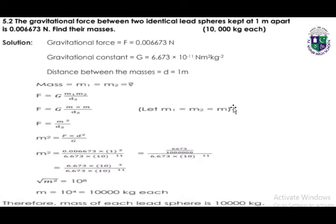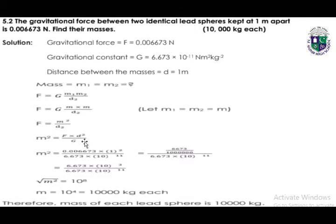Since the spheres are identical, m1 equals m2, so we use a single mass m. We rearrange the formula: m² = F·d² / G. Taking m² to the left side and putting the given values into our calculator, we get m² = 10⁸, so m = 10,000 kg. Therefore, the mass of each lead sphere is 10,000 kg.